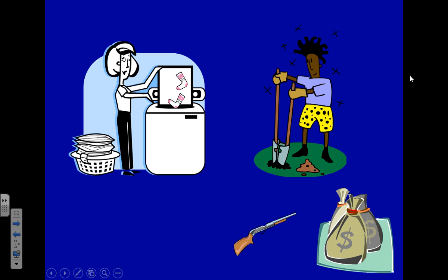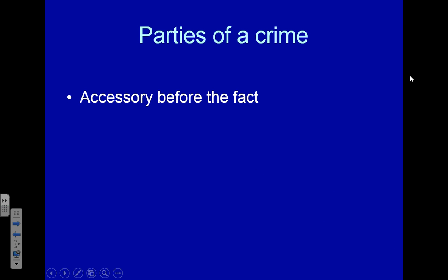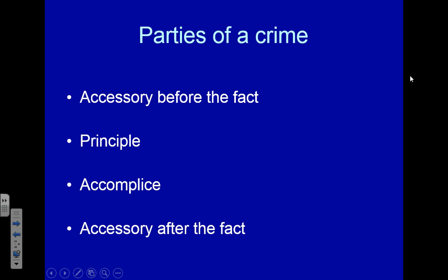Now, those are just vocabulary terms, but it's important that we realize them. The parties of a crime are: an accessory before the fact, a principal, an accomplice, and an accessory after the fact. Not every crime has all of these parties — a crime may just have a principal — but they may have multiple accessories before the fact, multiple accomplices, and multiple accessories after the fact.